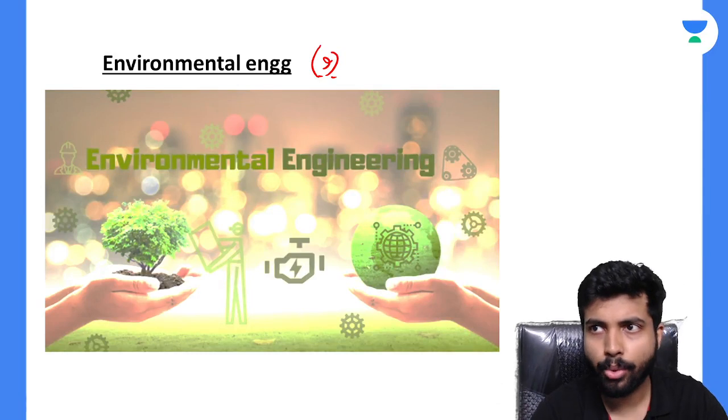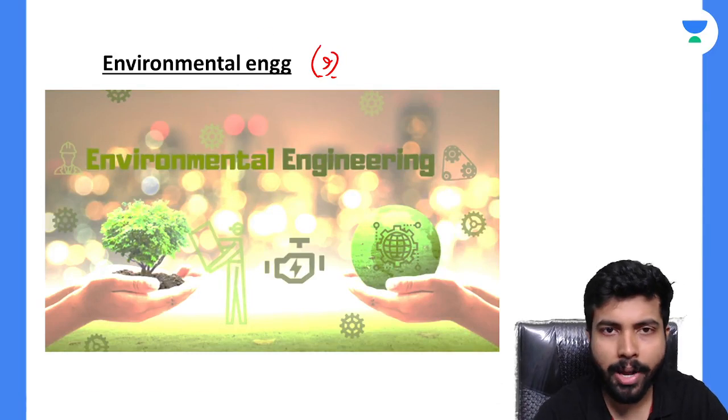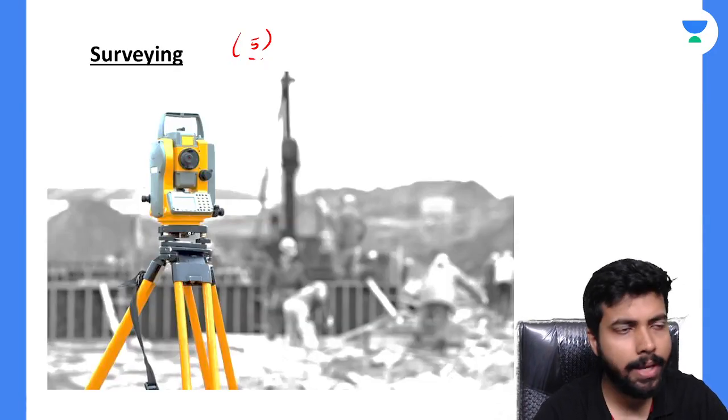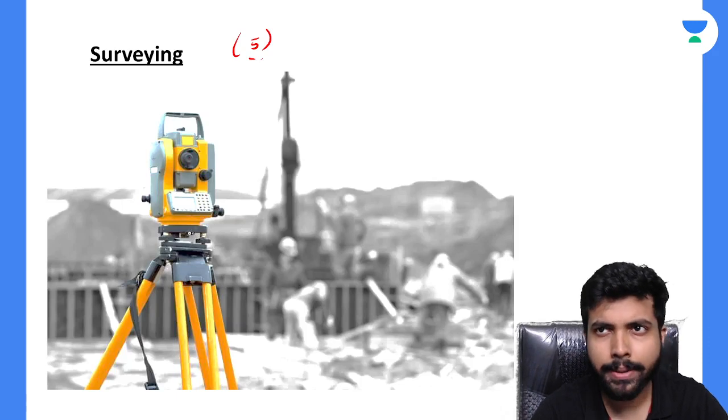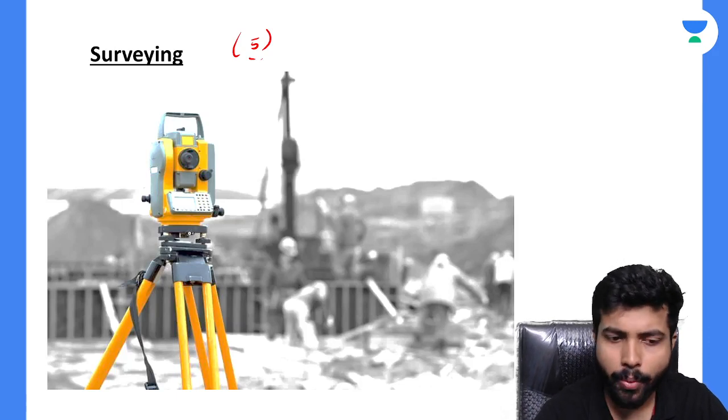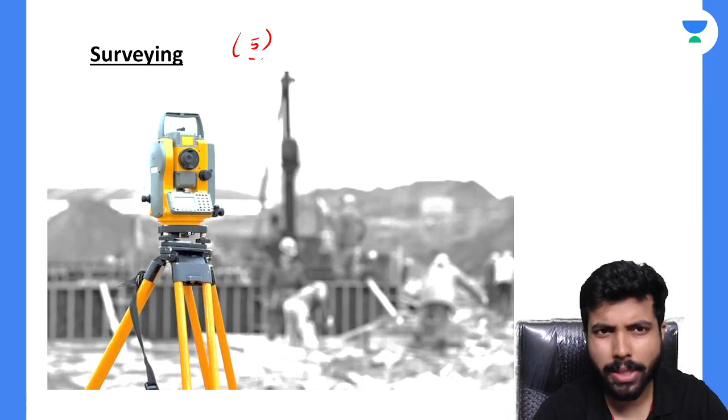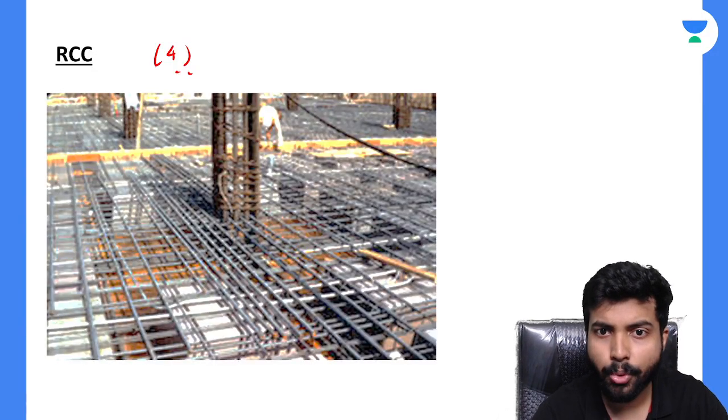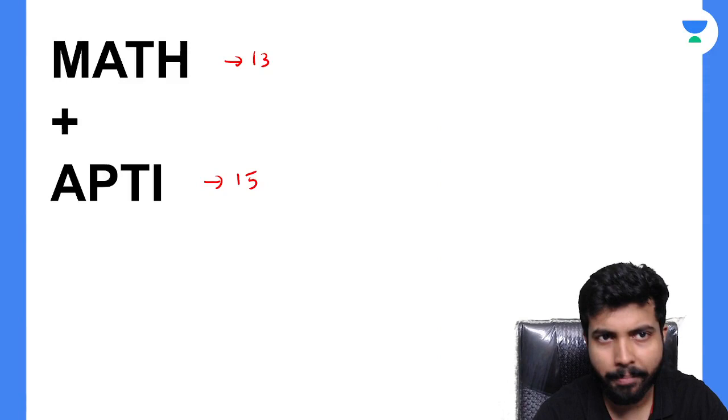From Environment, they will likely give three 2-mark and three 1-mark questions. From Surveying, they are going to give most likely two 2-mark questions and one 1-mark question. From RCC, mostly two 2-mark questions are going to come.